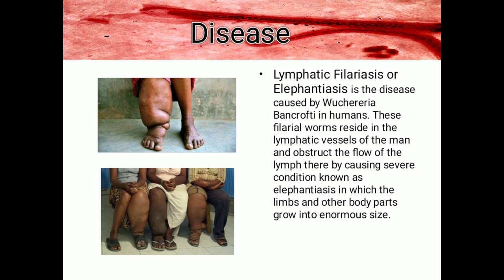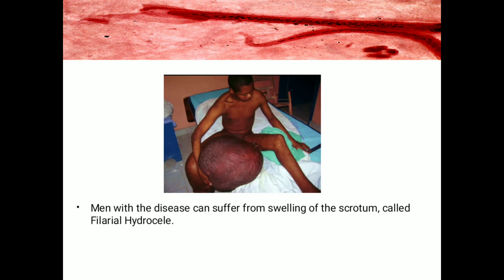When infected with W. bancrofti, one can develop lymphatic filariasis, also known as elephantiasis. These filarial worms reside in the lymphatic vessels and obstruct the flow of lymph, causing a severe condition in which the limbs and other body parts grow to enormous size. There are three different filariases that can cause lymphatic filariasis in humans, but most infections worldwide are caused by W. bancrofti. Men with the disease can also suffer from swelling of the scrotum, known as filarial hydrocele.